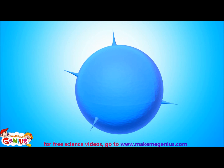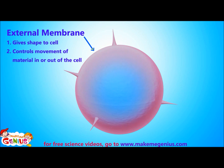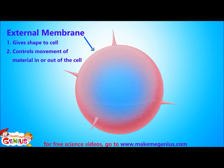Each cell is surrounded by an external membrane, which gives shape to the cell. This membrane allows certain substances to pass through it, thus controlling movement of material in and out of the cell.